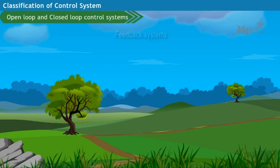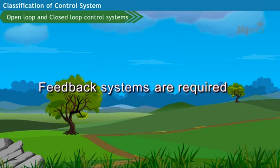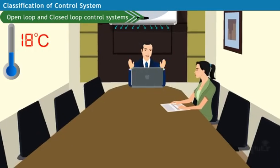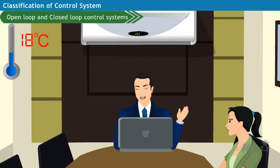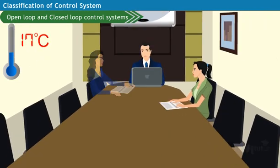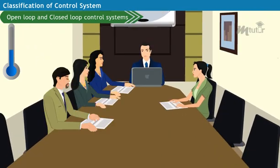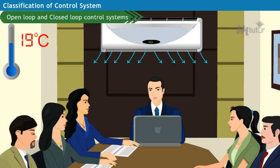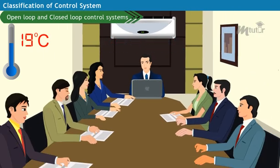Thus, a separate system is required to monitor the system output in order to obtain an optimum result. Consider modern technology air conditioners which are designed to function based on room temperature. It can automatically start to cool the room if the temperature exceeds the set temperature of the air conditioner using temperature sensors.